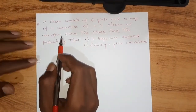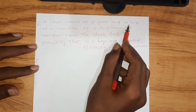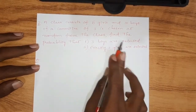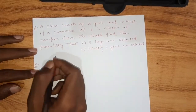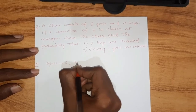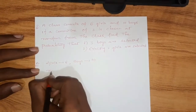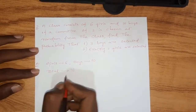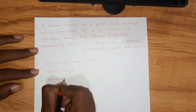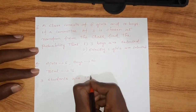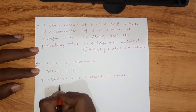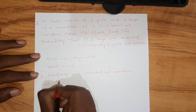The 2nd problem: a class consists of 6 girls and 10 boys. If a committee of 3 is chosen at random from the class, find the probability that 3 boys are selected, and find the probability that exactly 2 girls are selected. Total number of students is 16, so selecting 3 students can be done in 16C3 ways. For selecting 3 boys, we use 10C3 since there are 10 boys total.